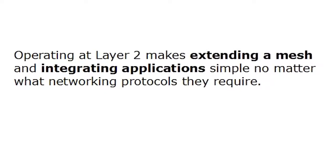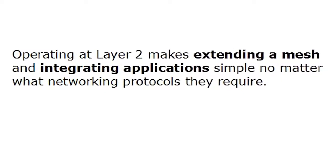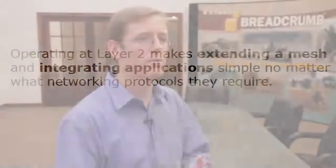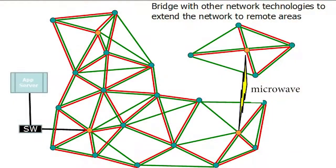Any protocol you want, IPv4, IPv6, if you have encrypted Ethernet frames, whatever you have, if it'll run over Ethernet, it'll run over a mesh. You can even use this to extend your network using other technologies like microwave or satellite. Operating at layer two makes extending a mesh and integrating applications simple, no matter what networking protocols they require. Breadcrumbs are shockingly compatible.